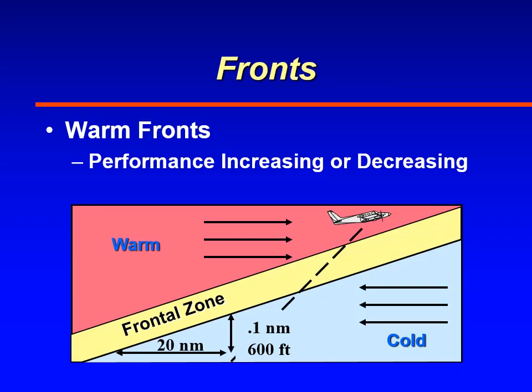Warm fronts, since they slope more gradually, tend to be more of a problem. The slope of a warm front is 1 to 200. So for example, if there's a front within 20 nautical miles of an airport, the front will be found 0.1 mile — or 600 feet — above the airport. That is a concern especially during final approach or departure.